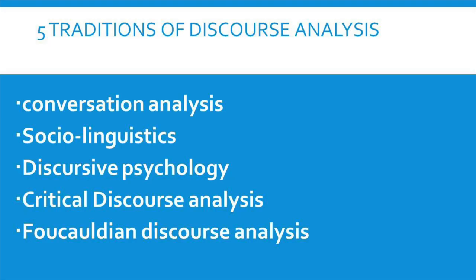In social science, five different categories of discourse analysis have emerged: conversational analysis, sociolinguistic analysis, discursive psychology, critical discourse analysis, and Foucauldian analysis. Conversational analysis is used in humanities to make sense of communications between individuals. Sociolinguistic analysis tries to understand the importance of social factors in language. In environmental sociology, the two most dominating approaches are critical discourse analysis and Foucauldian discourse analysis.